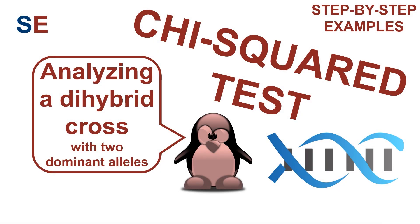The chi-squared test can be used for a variety of analyses of count data. One important example in biology is examining the results from a dihybrid cross between two heterozygous individuals which have dominant and recessive alleles at each of two loci. Let's look at how this works.